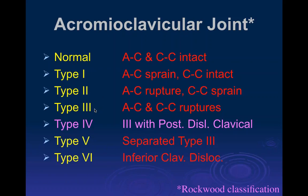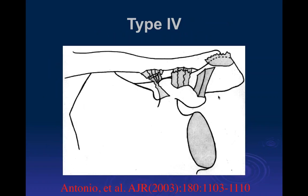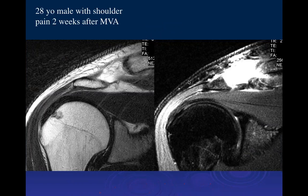Type 4 is like Type 3 but with a posterior dislocation of the clavicle. Instead of being anterior, the clavicle is posteriorly displaced with respect to the acromion process. In this 28-year-old male with shoulder pain two weeks after a motor vehicle accident, we have a coronal T2 and PD fat-sat image of the shoulder.